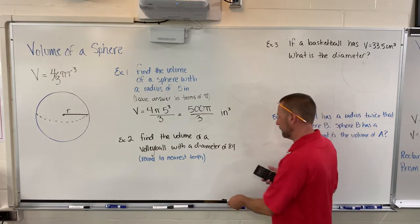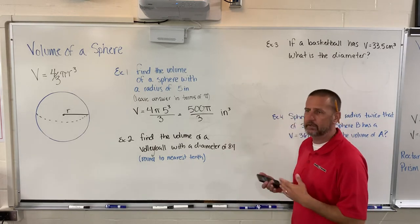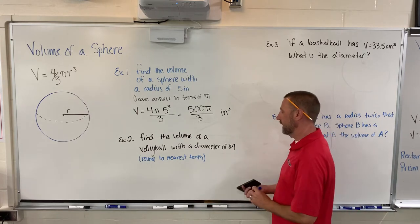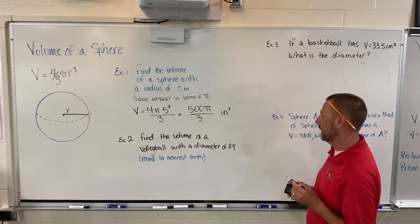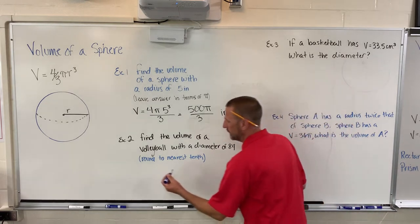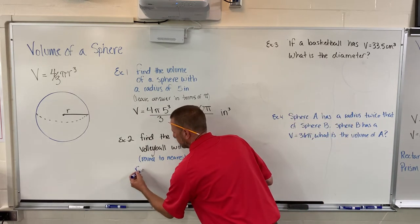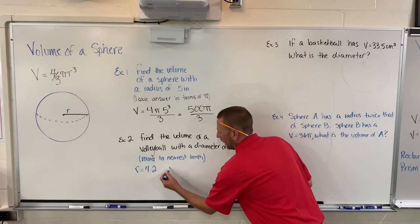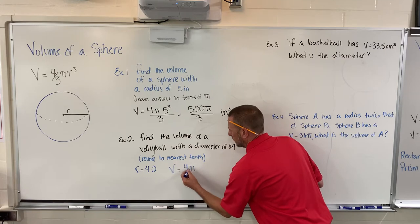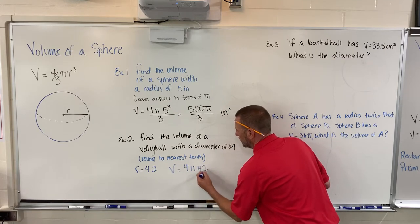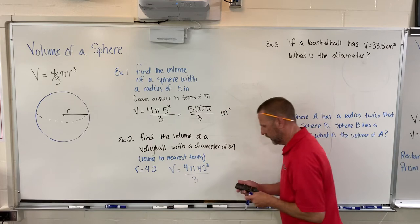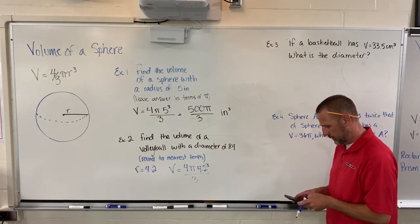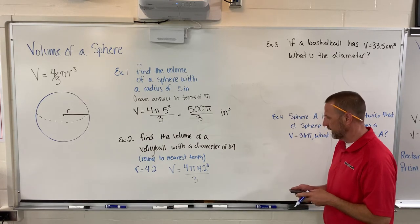Let's say we have a situation where we do want to get the answer and round it to the nearest tenth, which means we want an exact answer. I've got a volume of a volleyball with a diameter of 8.4. Well that immediately means we need to calculate our radius which is half, so our radius is 4.2. We write our formula and we go 4 pi, 4.2 cubed over 3. Let me calculate that - 4.2 times 4.2 times 4.2.